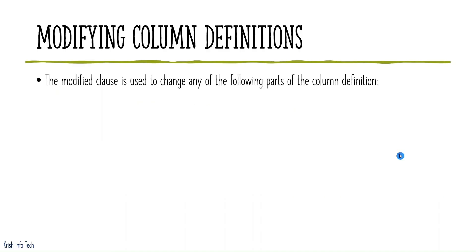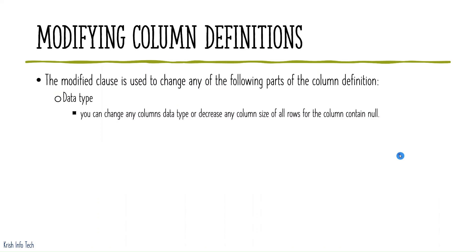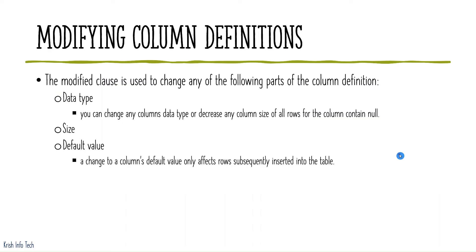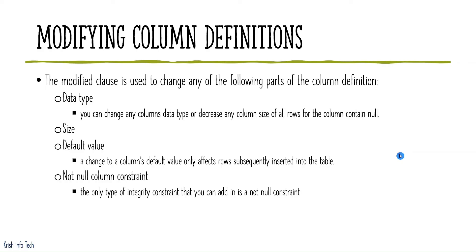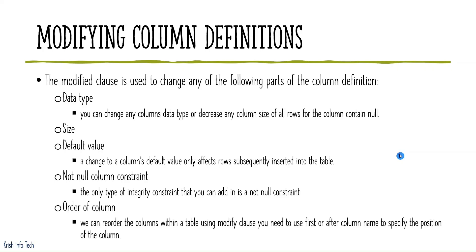Modifying column definitions — you can change the data type, size, default value, or constraint of a column. For example, you can change a default value from 20000 to 25000. You can add a NOT NULL constraint — this is the only integrity constraint type you can add while modifying. You can also change the order of columns using the AFTER clause.